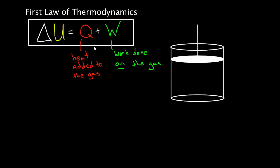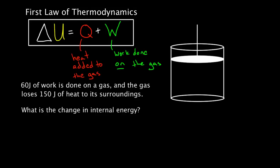Alright, you've seen the first law of thermodynamics — this is what it says. Let's see how you use it by looking at a particular example. 60 joules of work is done on a gas, and the gas loses 150 joules of heat to its surroundings. What is the change in internal energy?